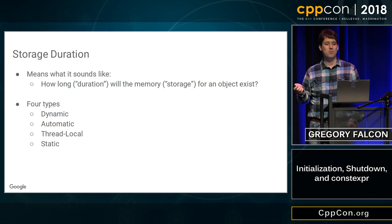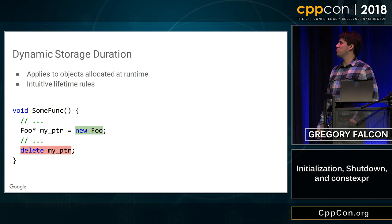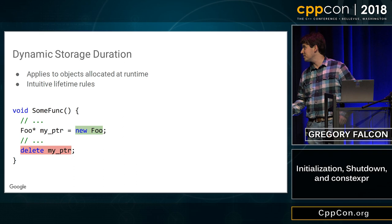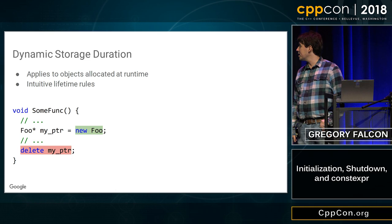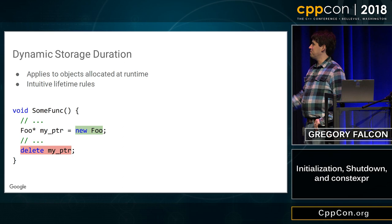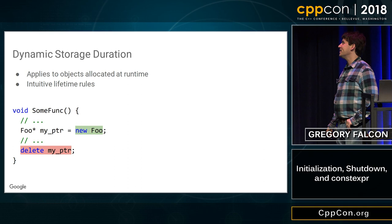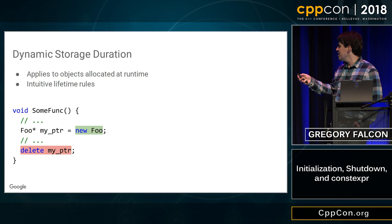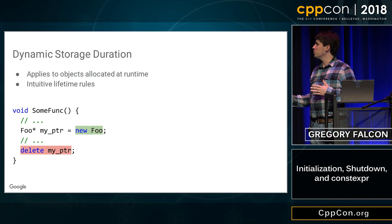Dynamic storage duration is very straightforward. These are objects that you've introduced via operator new — you've just allocated this object. We're creating an object of type foo and then destroying it later. The reason there's not much to say about it is your intuition about how the rules work is probably correct. The lifetime of this object started when we called new, and it ends when we delete it. You can accidentally double-delete it or leak the pointer, but your intuition about the rules is probably not going to lead you astray.